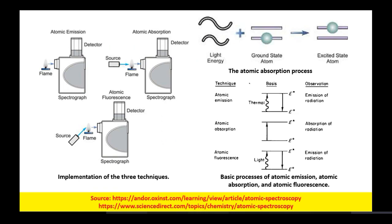The implementation of these three techniques: in atomic emission, you put the sample within the flame, record it using a detector. The detector will have a spectrum decomposing unit which will help you record the spectrum or spectrogram.